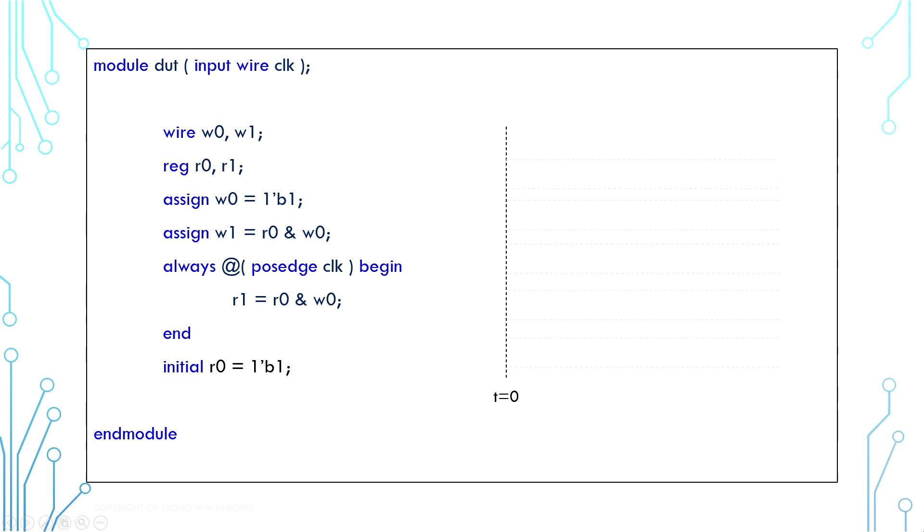From a simulation perspective, we need to look into the behavior of the signals. Clock is an input signal. Let us assume this is how it behaves. W0 is hard connected to high from the beginning. R0 is driven to high at the beginning. W1 will follow W0 and R0 at all times. R1 will get the value of W0 and R0 at every positive edge of clock.